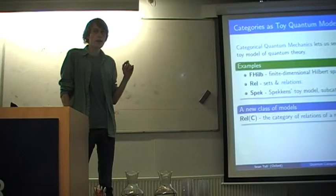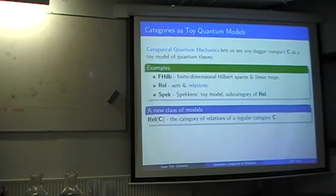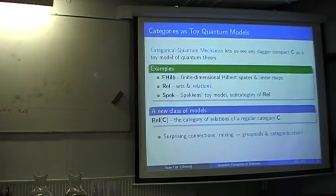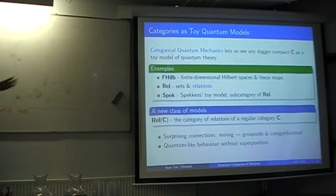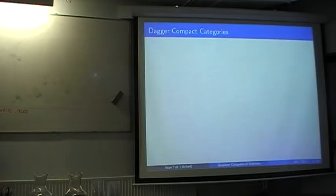What we're going to do is look at a new class of models. We're going to generalise the REL construction: start from a regular category C — an example to have in mind is the category of vector spaces — and build relations from there. In that case, we'll get the linear relations we've heard about in the workshop from Powell. For certain special choices of C, these categories will behave in a much more quantum-like way, but they won't have any notion of superposition — that's a kind of separating out of aspects.